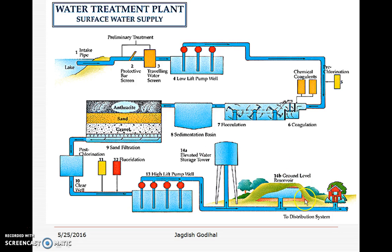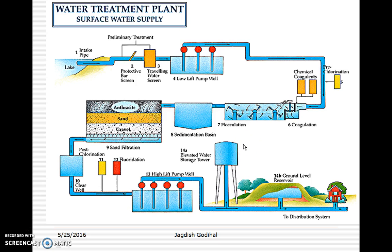In the distribution network, treated water is supplied to consumers through the network of pipes laid in towns and cities. There is every possibility of cross-contamination of treated water due to leakages in the distribution system, especially if the distribution pipes run in parallel with the sewage line, whereby treated water gets contaminated. To identify the location of contamination, we have to go for monitoring and assessment of water quality in the distribution network. Overall, the assessment of water quality plays a very important role in supplying potable water to consumers and protecting their health.